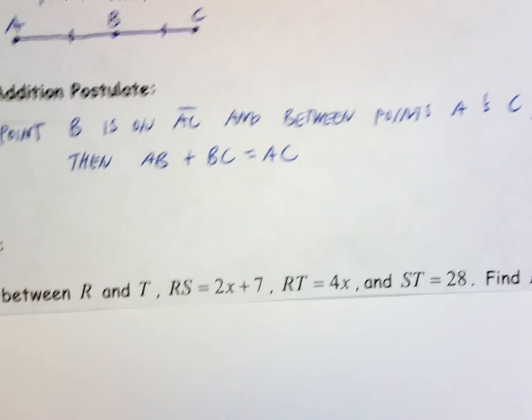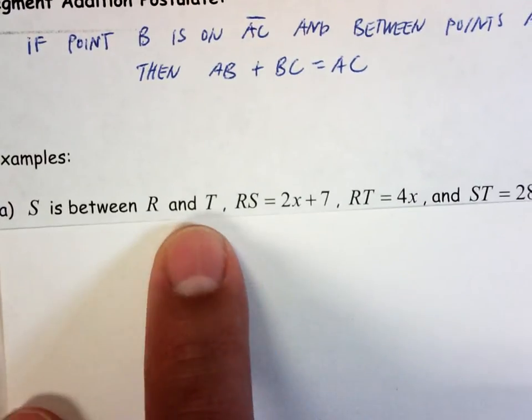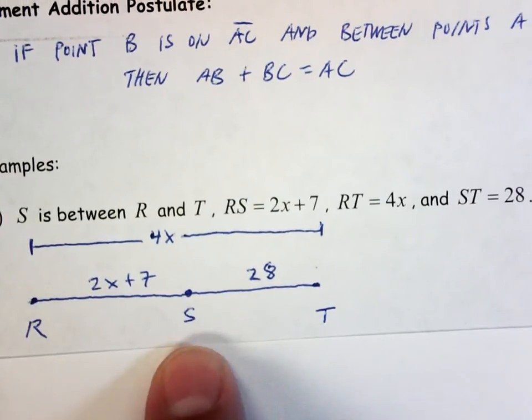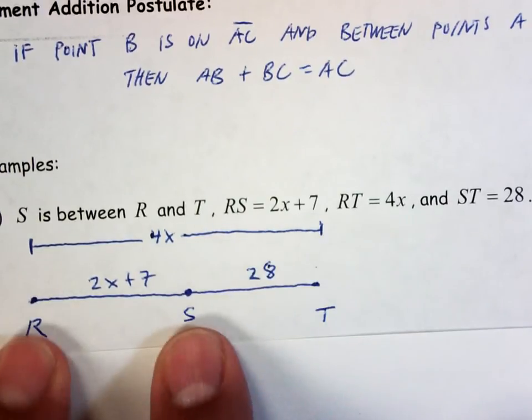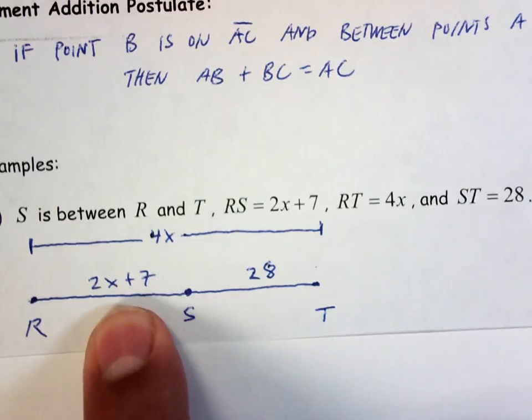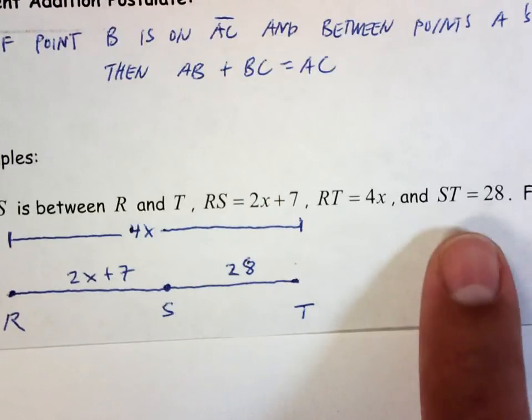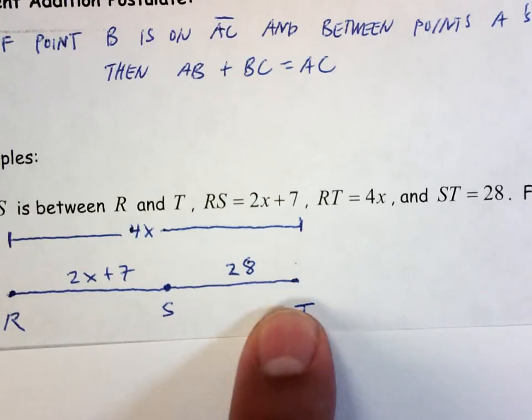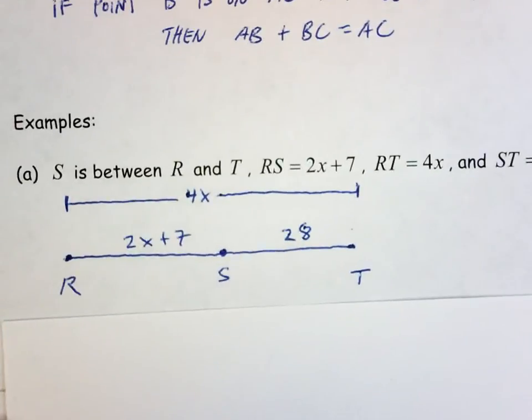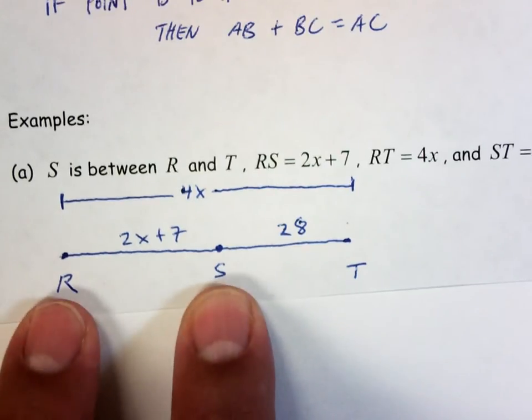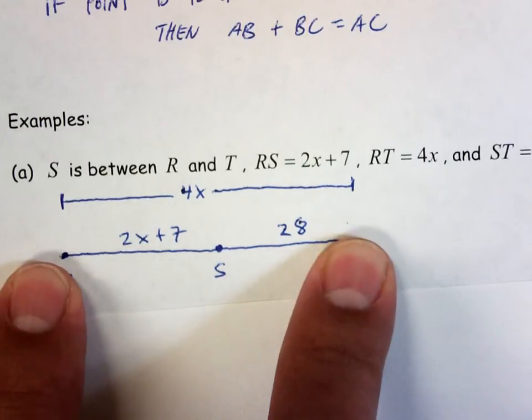All right, so this is where geometry and algebra meet. This is why I needed you to be good at algebra, because the algebra is coming in. So S is between R and T. So I draw a picture. There's S, there's R and T. It's just somewhere in the middle between R and T. RS is equal to 2x + 7. So RS from R to S is 2x + 7. It then says RT is 4x. So RT all the way across, RT is 4x. And ST is 28. So from S to T is 28. It then wants to know, find RT. It's always good to draw a picture.